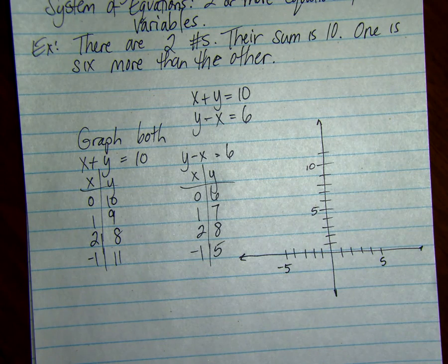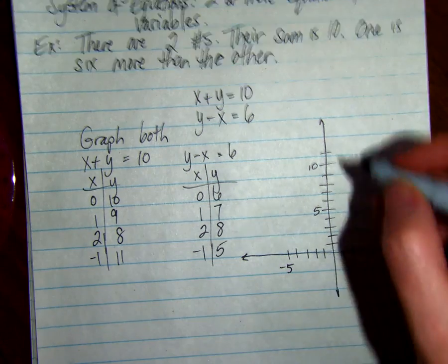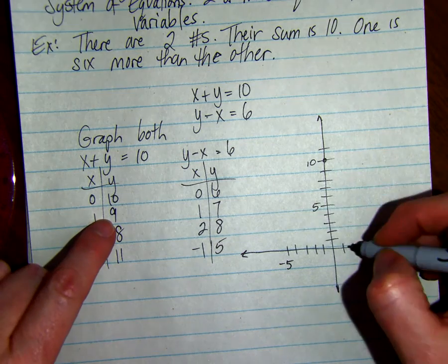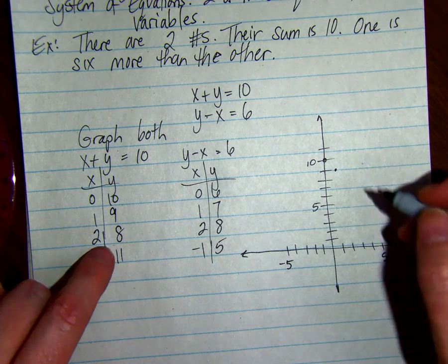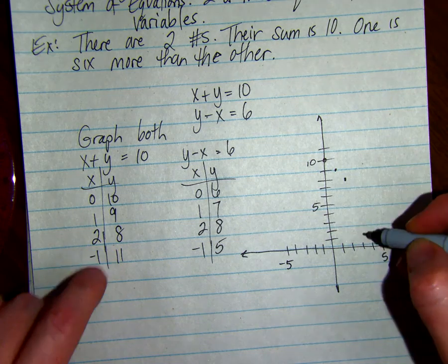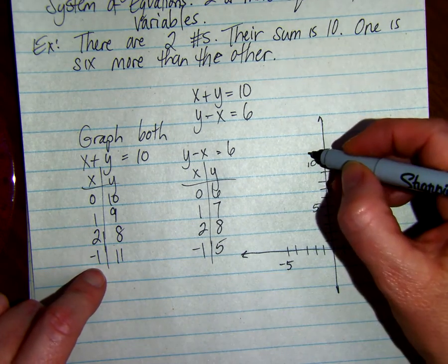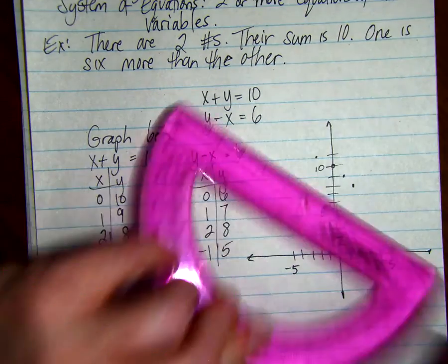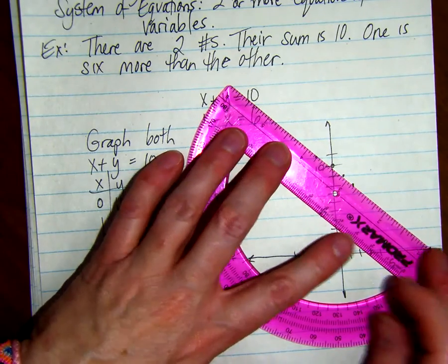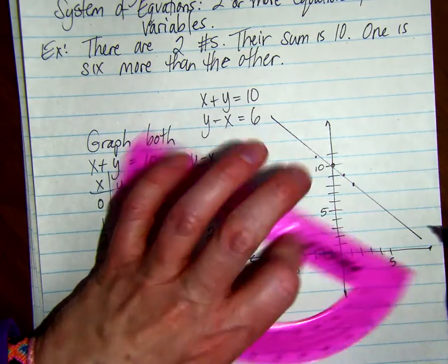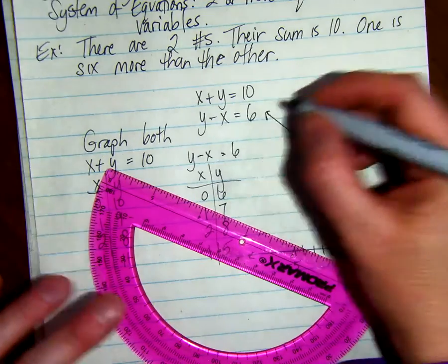We're going to graph these. So let's see, zero, ten. This is the first one. One, nine. Two, eight. And negative one, eleven. So this is a line. We're going to make it straight through those points and put arrows on it.